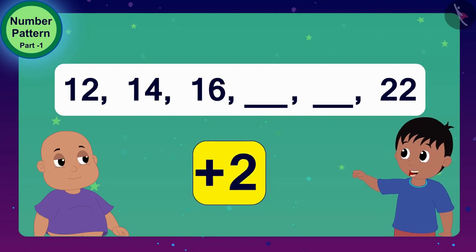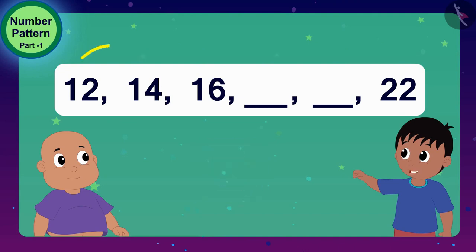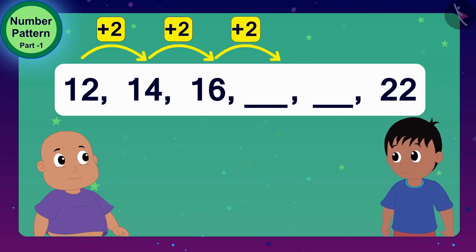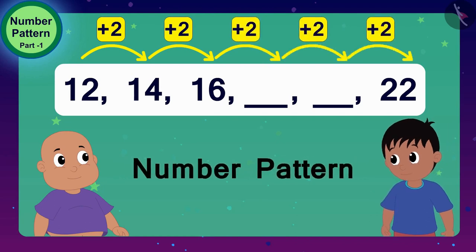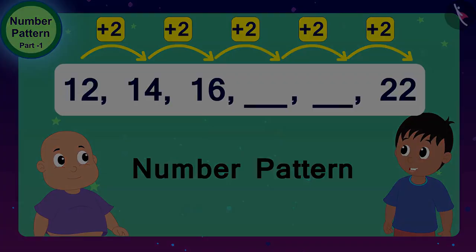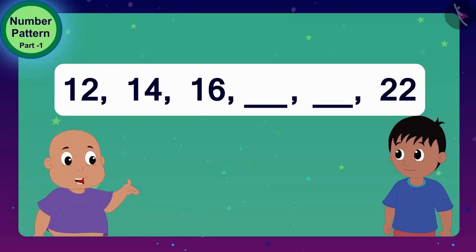I got the rule of these numbers! When 2 is added to each digit, the next digit is found. And Bablu, do you know such groups of numbers in which numbers follow a particular rule? We call them number patterns. This number pattern is so interesting!